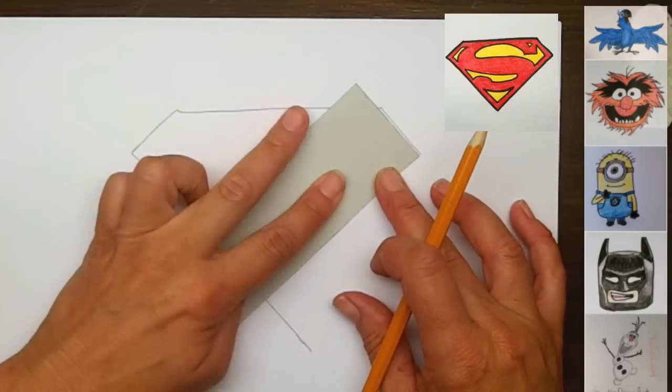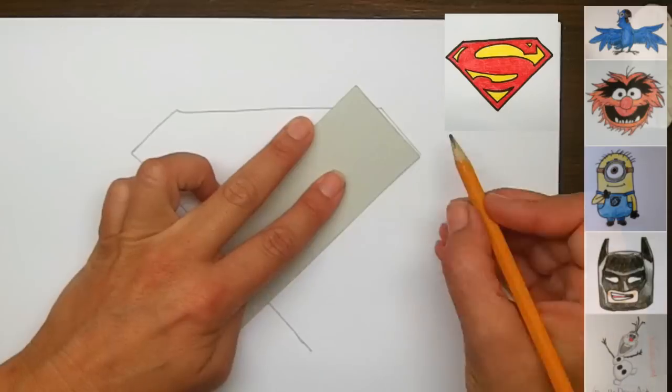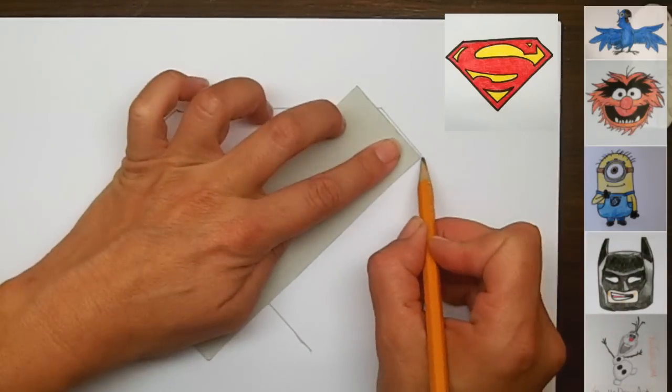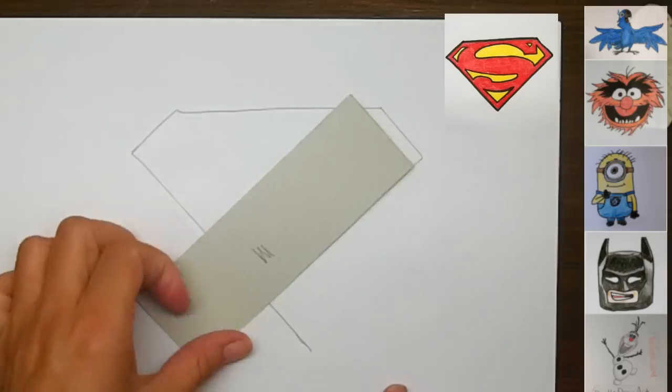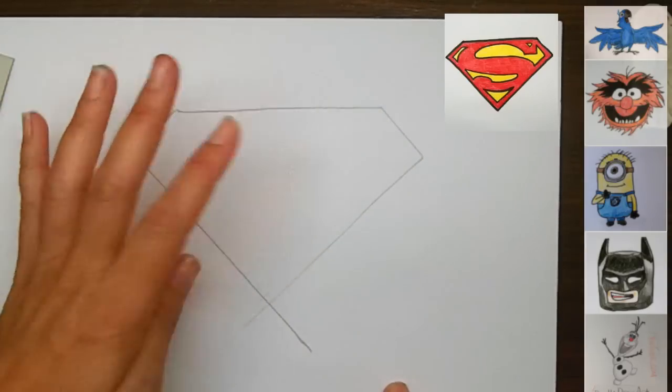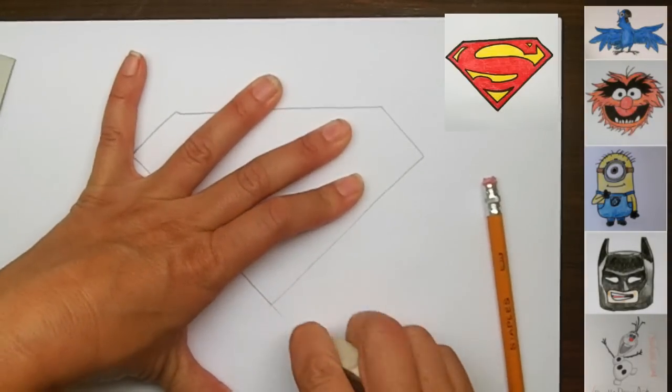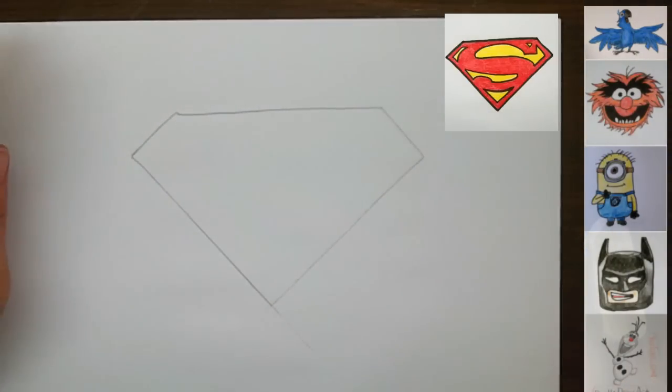and then we're going to do the same thing over here. We're going to make sure that this is square, and we're just going to come down until we meet up with our other corner that we just extended beyond here. Okay, so this is the whole shape of the logo, and this is just extra lines that happened because we intersected our straight corner.